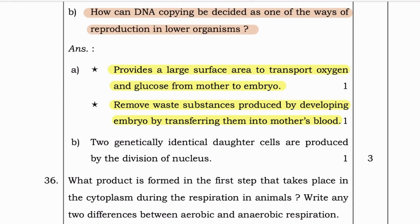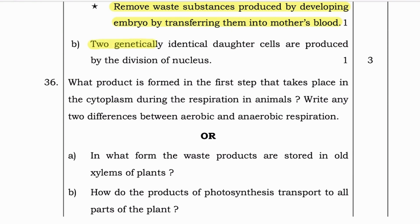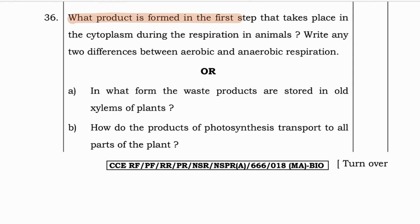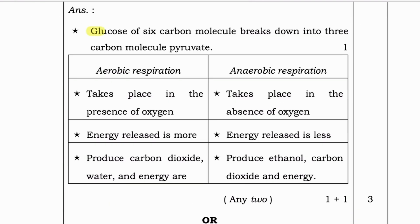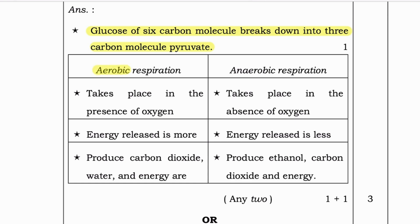Next: How can DNA copying be considered one of the ways of reproduction in lower organisms? Two genetically identical daughter cells are produced by the division of the nucleus. What product is formed in the first step in the cytoplasm during respiration in animals? Glucose, a six-carbon molecule, breaks down into a three-carbon molecule. Difference between aerobic and anaerobic respiration: aerobic respiration occurs in the presence of oxygen, releases more energy, and produces CO2, water, and energy. Anaerobic respiration occurs in the absence of oxygen, releases less energy, and produces ethanol, CO2, and energy.